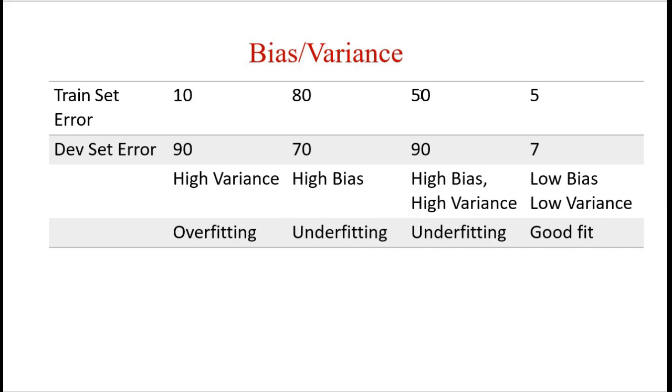Coming to the third example, our training error is 50% and dev set error is 90%. So we can say that our model is highly biased and highly variance. Why? Because training error is considerably high. Along with that, dev error is also very high. So it is called a highly biased, highly variance model. It is also called underfitting.